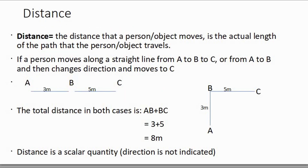So first, let us denote the difference between the two. First of all, Distance. The distance that a person or object moves is the actual length of the path that the person or object travels. For example, if I walk 5 meters to the left, I have traveled a distance of 5 meters.